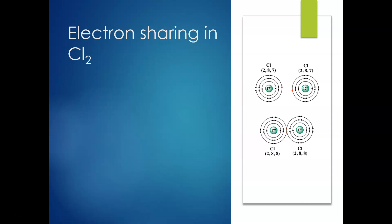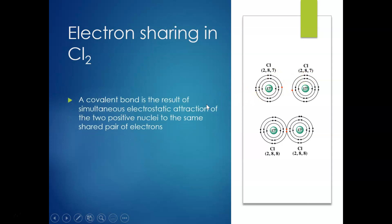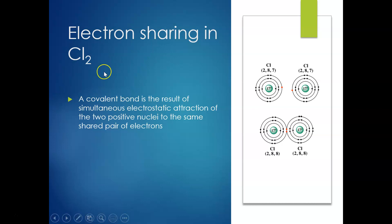Let's have a look at chlorine. We've got two chlorine atoms and if we look at the outer shell we've got one, two, three, four, five, six, seven electrons. So chlorine wants to gain one more electron in that outer shell to make it complete. We've got two chlorine atoms both wanting to gain one more electron. A covalent bond is a result of the simultaneous electrostatic attraction of two positive nuclei wanting to share the same paired electrons — this nucleus is positive because we've got 17 protons, and we're trying to grab that other electron.